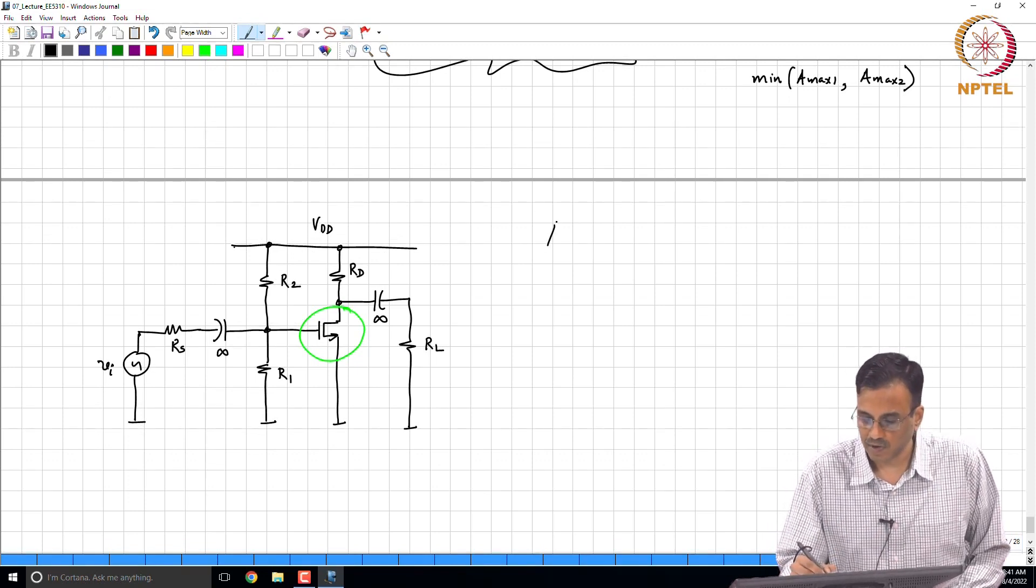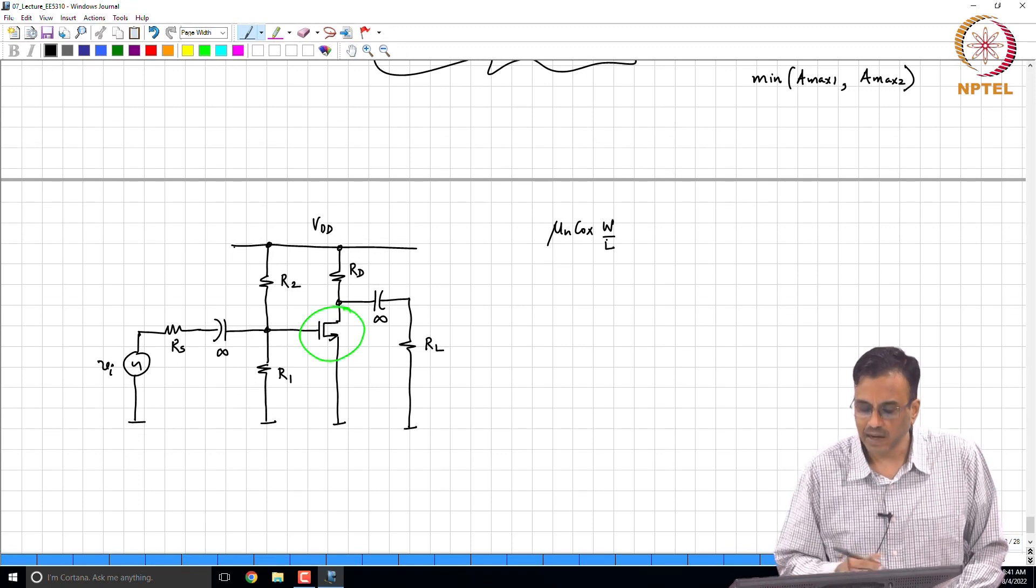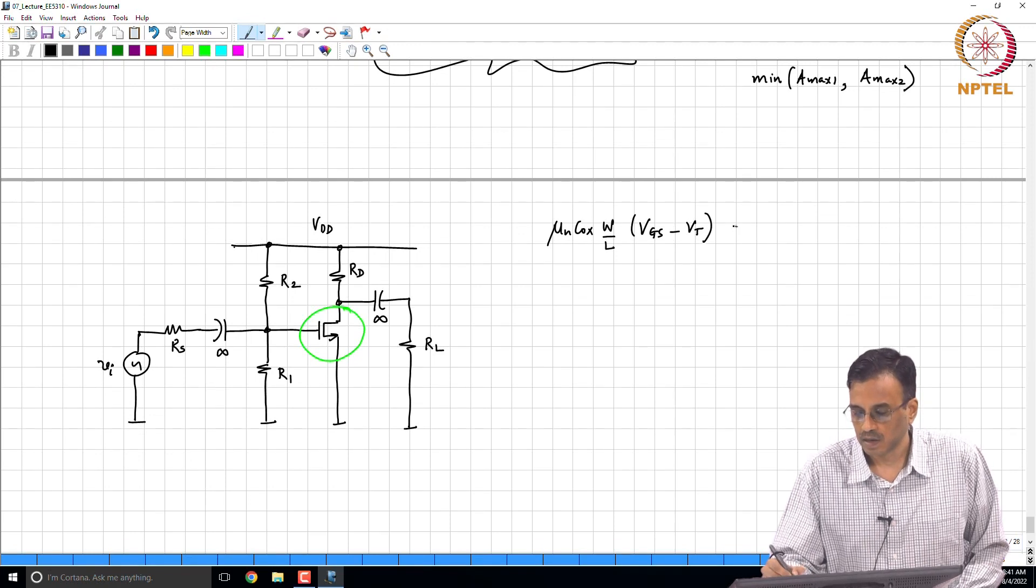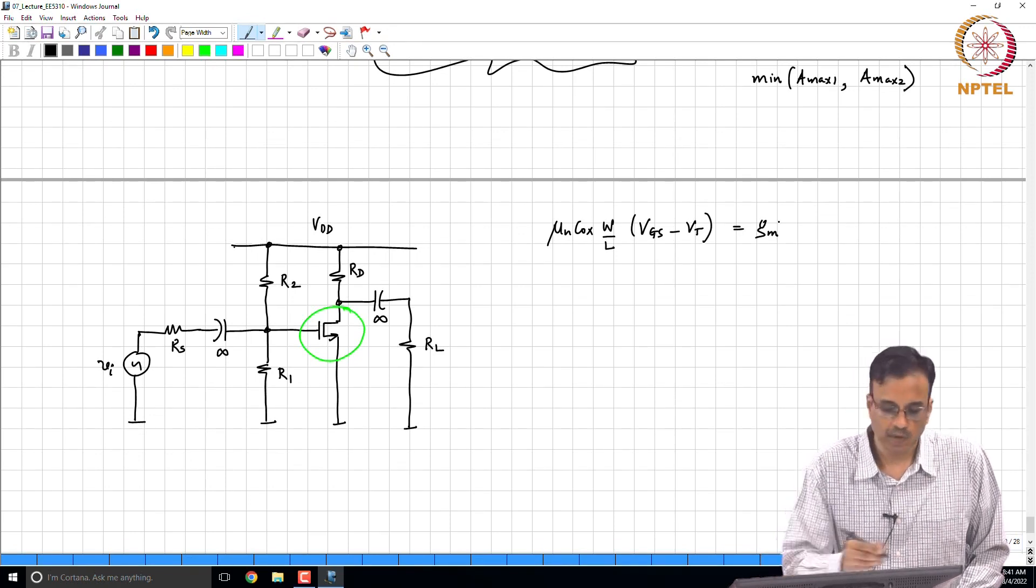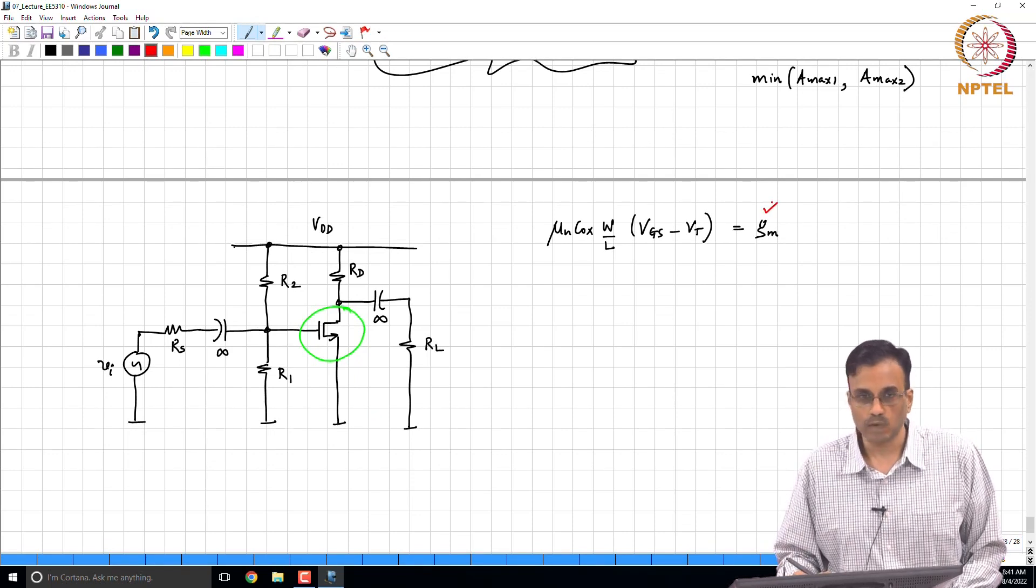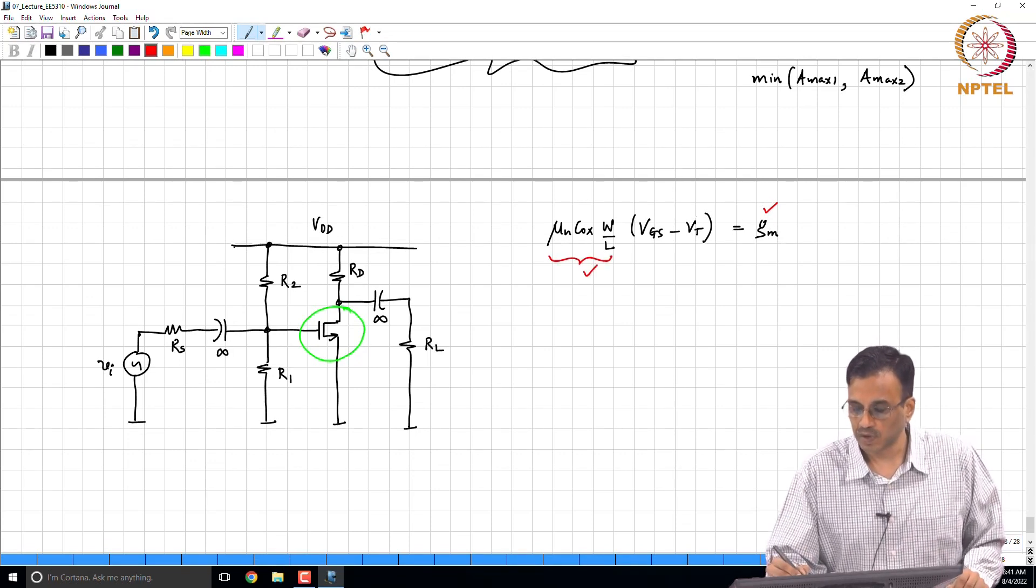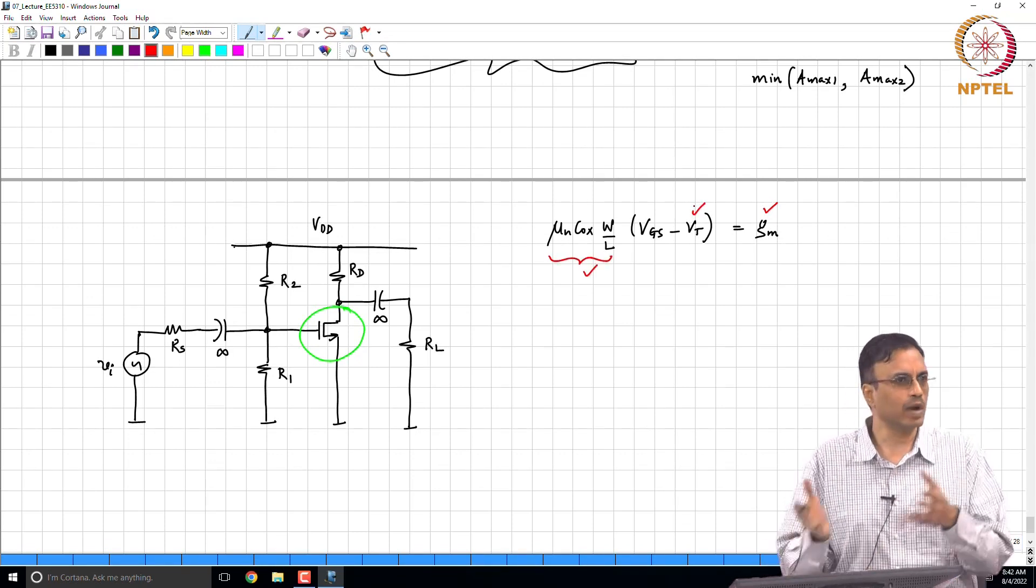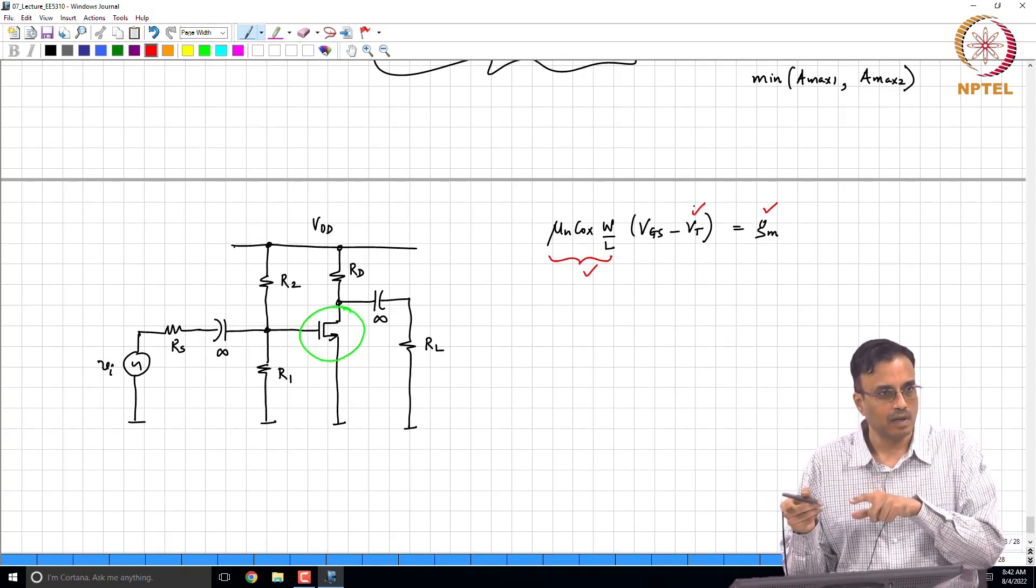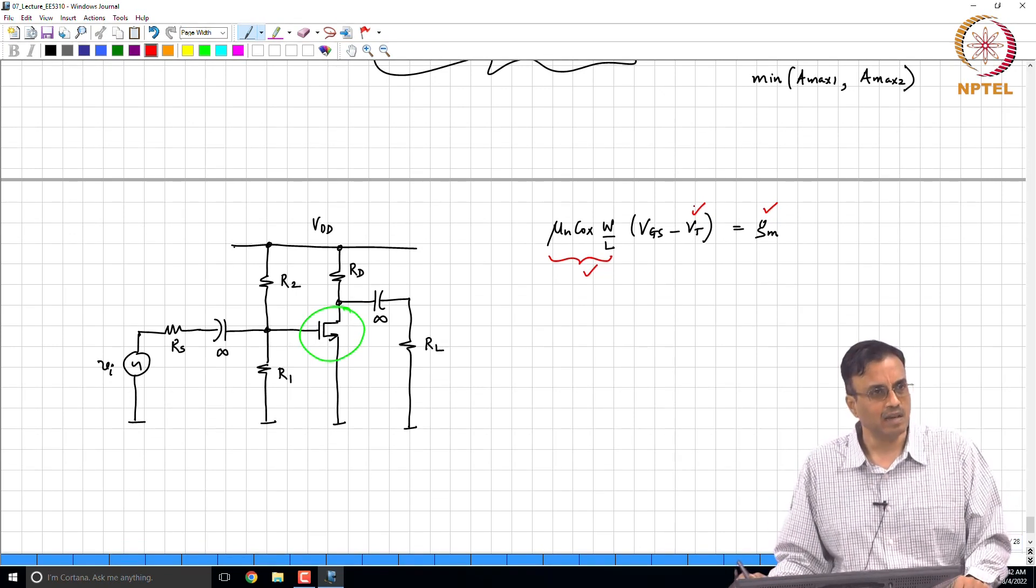So we have gone and let's say we want a certain g_m, what are we going to do? We know the properties of the transistor. So let's say we know mu_n C_ox W/L and V_T. What are we going to do? We are going to basically say mu_n C_ox W/L times (V_GS - V_T) is g_m. We know this, we want this, we know this and we know this.